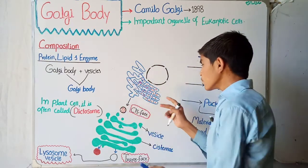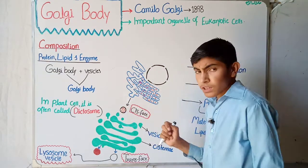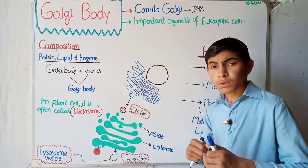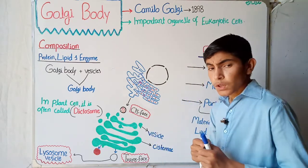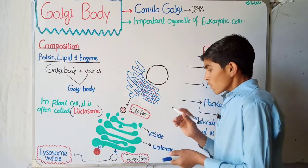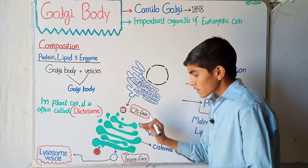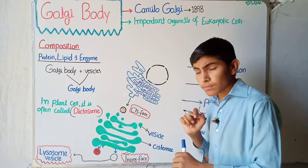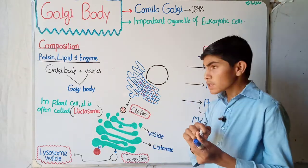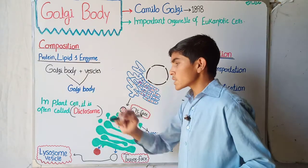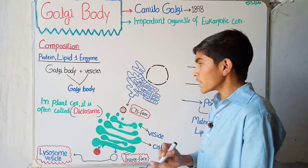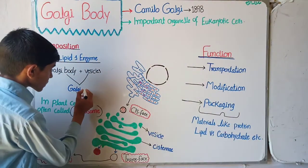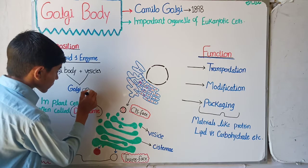The endoplasmic reticulum is made of two parts: one is the rough and the second is the smooth. You can watch my previous lecture on the endoplasmic reticulum — I have given the links in the description and comments. Now, a little bit toward the cell membrane side, there is another structure in a long flat stack form. These are called the Golgi body. Golgi body plus vesicles are called the Golgi apparatus.